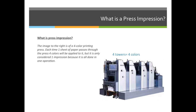This slide reiterates what I said: the image to the right is of a four-color printing press. Each time one sheet of paper passes through the press, four colors will be applied, but it is only considered one press impression. If the sheet has to go through two times, it's two impressions. If 10,000 sheets go through the press one time, there are 10,000 impressions. If those sheets are flipped over and the backs are printed, it's 20,000 impressions — 10,000 for the front and 10,000 for the back.